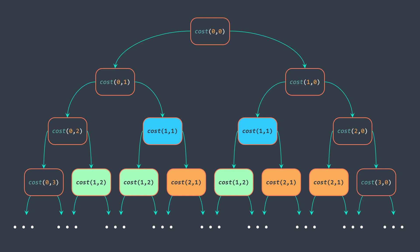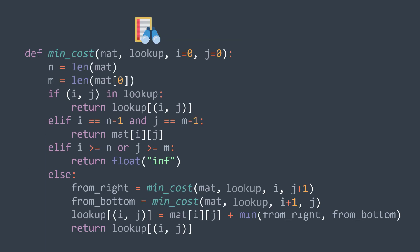Let's see how to optimize our solution with both dynamic programming approaches. Using the top-down approach, we add a lookup table where the key is the pair (i, j) representing the coordinates of a cell in the matrix, and the value is the calculated minimum cost.